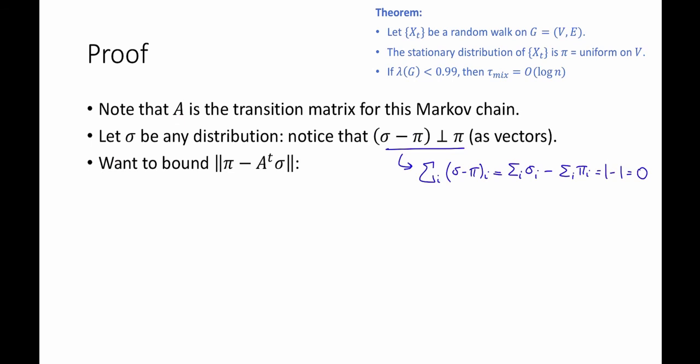Given that observation, we'd like to bound, as we said before, the total variation distance between pi and A to the t times sigma. So let's go ahead and do that. So the total variation distance, by definition, is half of the L1 distance.